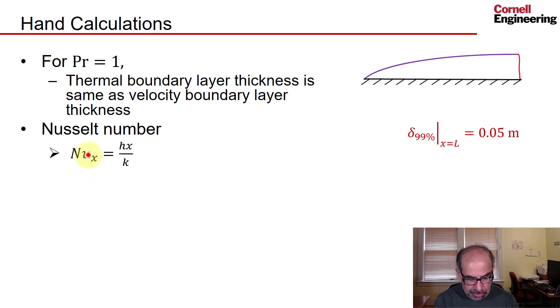The Nusselt number is defined this way, hx over k, where h is the surface heat transfer coefficient, which is related to the heat flux at the wall. If I have the surface heat transfer coefficient, and I take the difference between the wall temperature and the free stream and multiply it by h, I should get the heat flux at the wall.